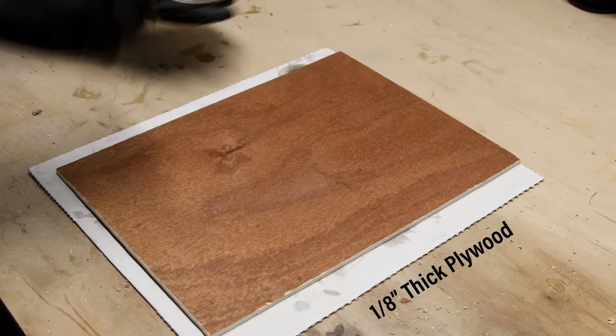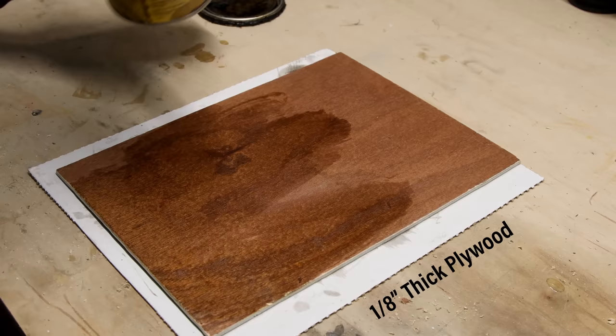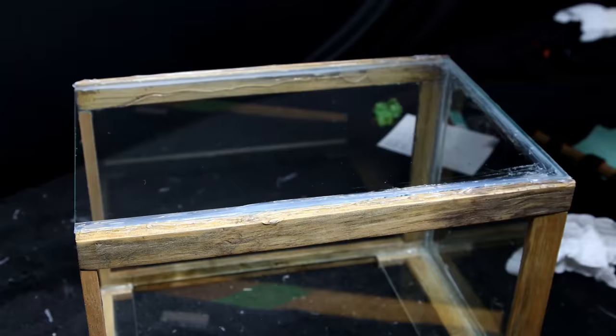At this point, I decided that the enclosure should have a back. For that, I stained a piece of plywood with a dark stain and siliconed it to the glass.